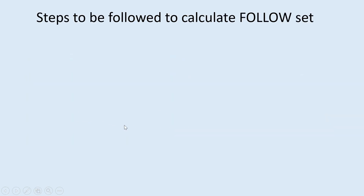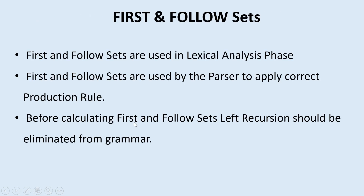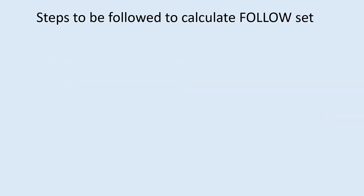Before calculating the follow set, we need to calculate the first set, and we need to make sure that the productions do not contain left recursion. If the productions contain left recursion, we need to eliminate it first, and then we calculate the first and follow sets.